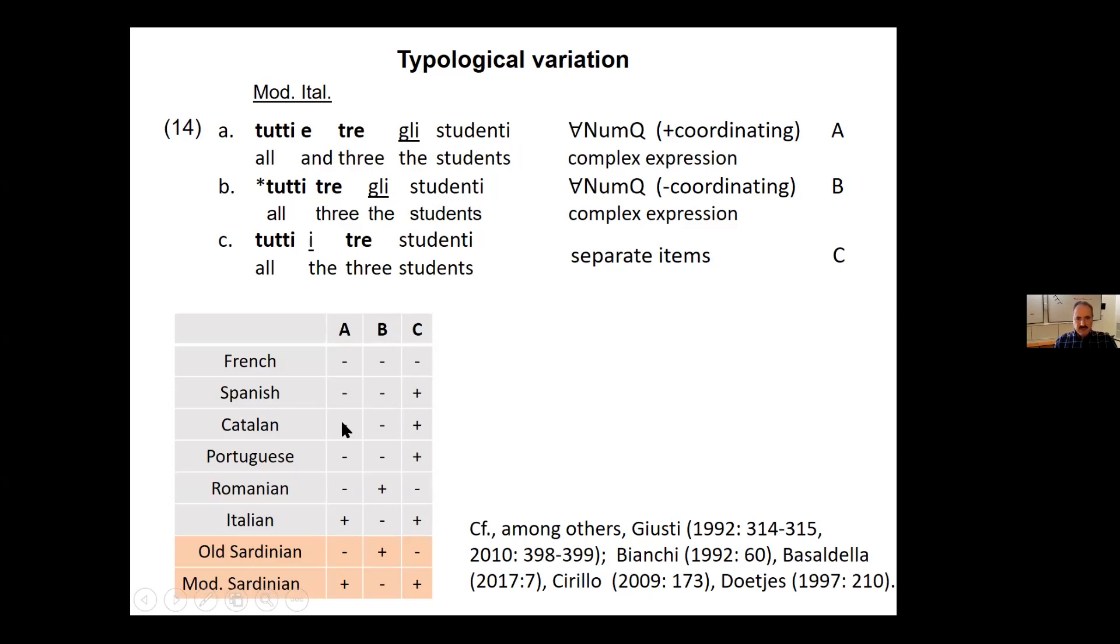This is the Old Sardinian order. And then we have this order with the article preceding the numeral, TUTTI e tre studenti. Let's call them for now A, B, and C. And then we see quite a variation. So French doesn't allow this at all. Spanish has only option C, and also the other Ibero-Romance languages. Romanian seems to have the option B, like Old Sardinian, but the position of the article, since it's at the end post nominally, it's a bit difficult to tell. Italian has these both options, A and C, and Old Sardinian has only option B, while Modern Sardinian has the same options like Italian, which might in fact be later Italian influence.